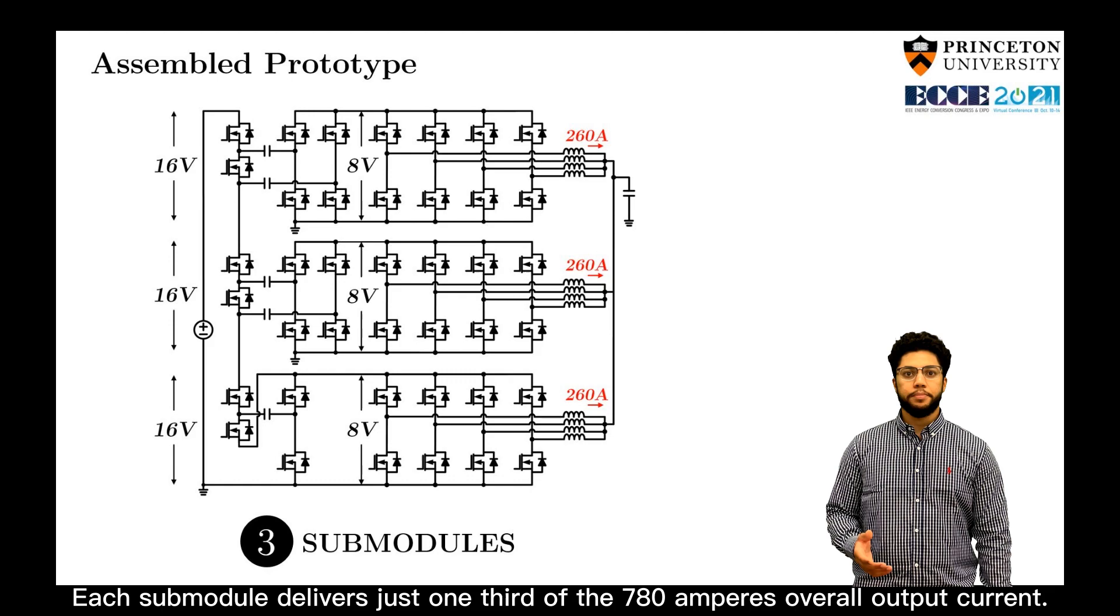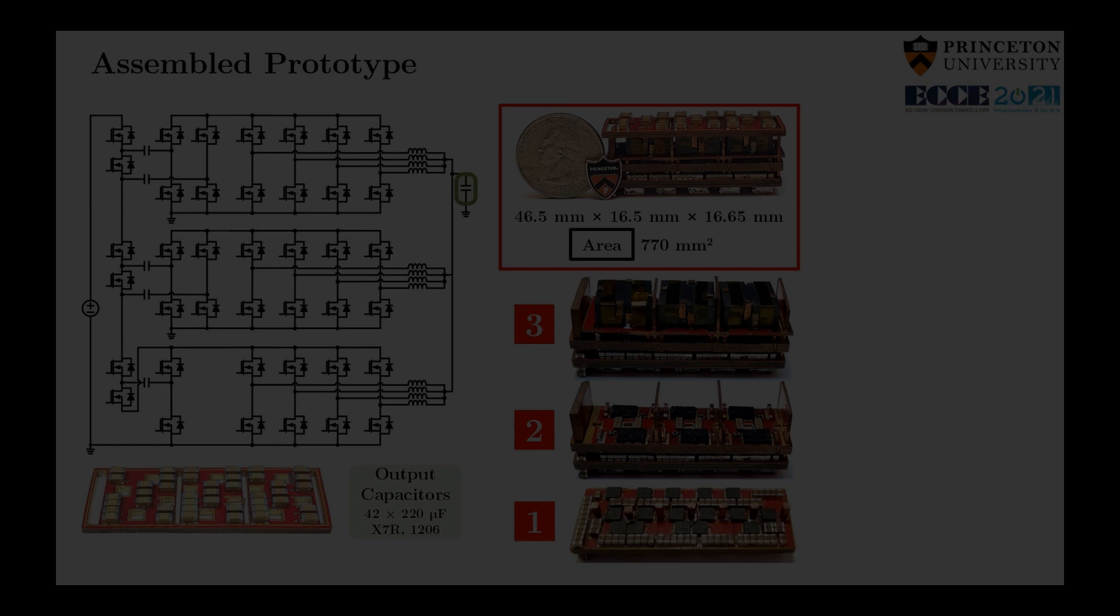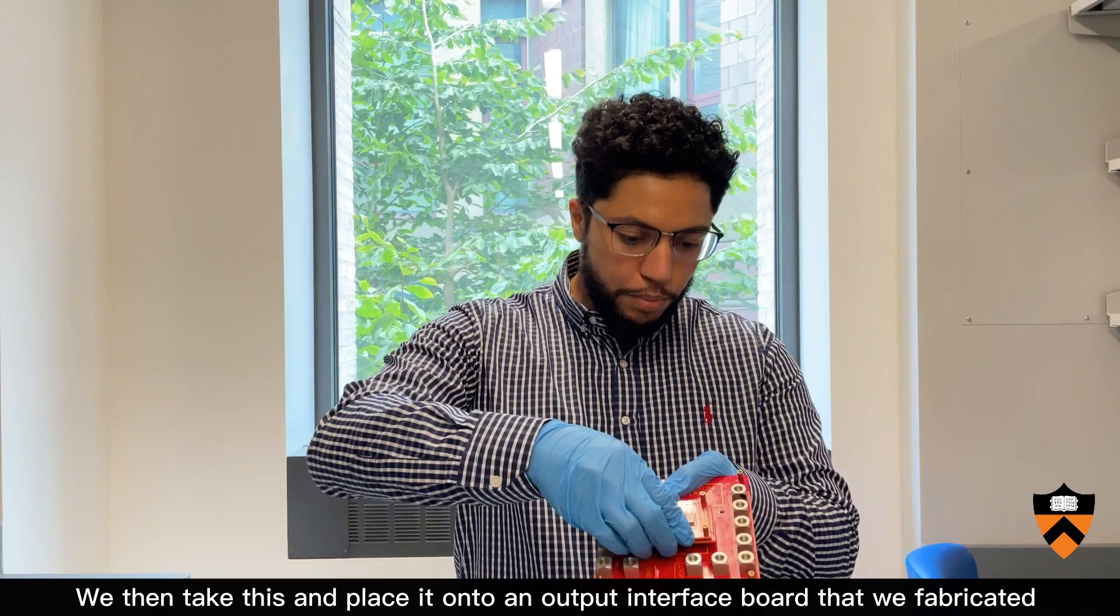Here you can see the power stage of each part of the circuit, as well as how they are vertically assembled together. So once the power stage and gate drives are assembled, we then take this and place it onto an output interface board that we fabricated to do the experiments in our lab.